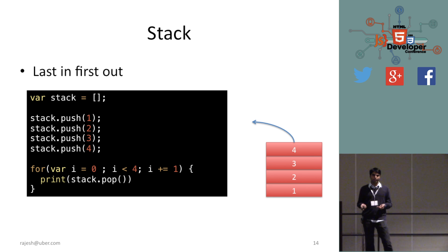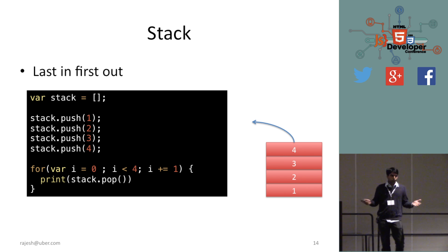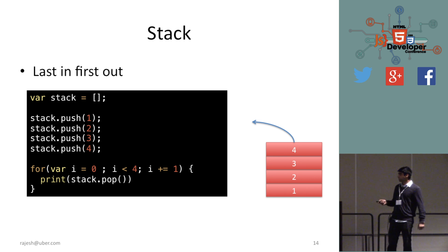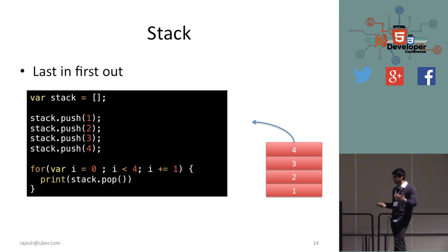A stack is a data structure best understood as last-in, first-out. You push one, two, three, four onto the stack, and when you take elements out you take from the top: four, three, two, one. In JavaScript it's easy to implement using an array. You say stack equal to an array, use stack.push() to push elements, and the array's pop() function works exactly like a stack pop.